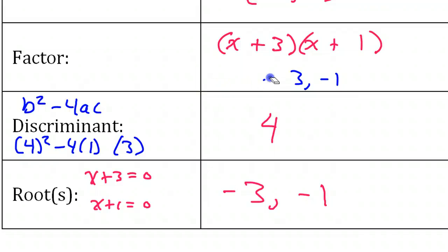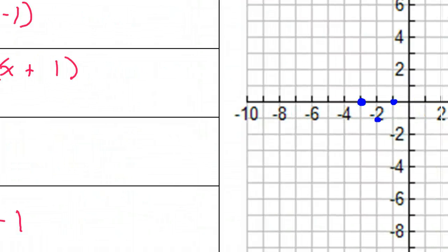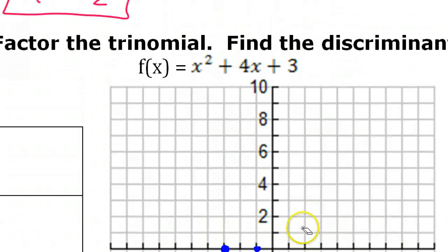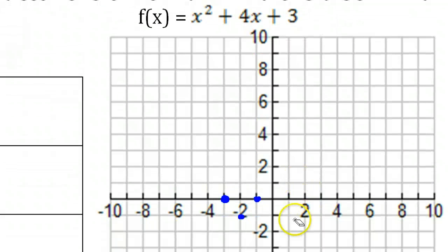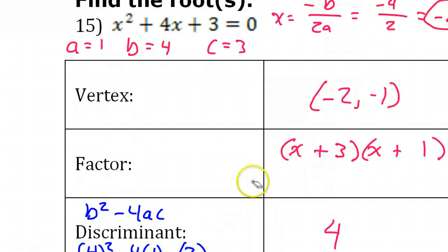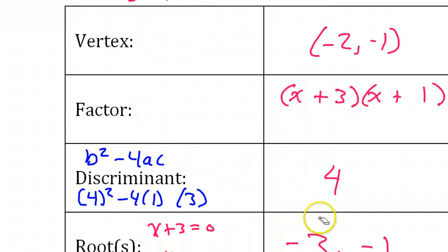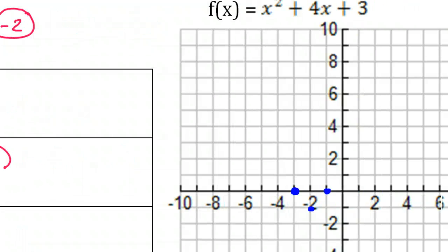The discriminant is b squared minus 4ac. That's 4 squared minus 4 times 1 times 3. The discriminant is 4. The roots are negative 3 and negative 1, found by setting x plus 3 equal to 0 and x plus 1 equal to 0.